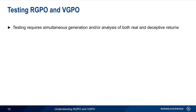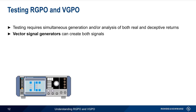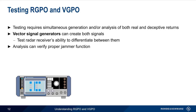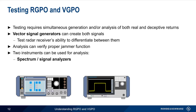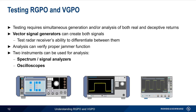Testing Range Gate Pull-Off or Velocity Gate Pull-Off requires simultaneous generation and or analysis of both real and deceptive returns. On the generation side, vector signal generators are used to create and combine these two signals, typically to test the radar receiver's ability to differentiate between the real and the deceptive signals. On the analysis side, verification of proper jammer function is performed — for example, does the jammer produce correct and believable deceptive returns? Two categories of test and measurement instruments can be used: signal or spectrum analyzers, which are often used for their ability to perform pulse or transient analysis, real-time analysis, and more; and in some cases, high-bandwidth oscilloscopes can also be used for range gate and velocity gate pull-off testing.